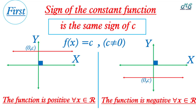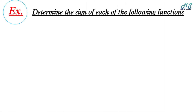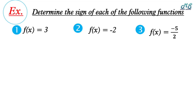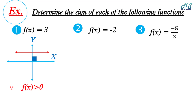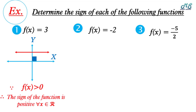Example: determine the sign of each of the following functions. Number one, f(x) = 3. It's represented by a line parallel to the x-axis and above it, because the constant equals 3, which is positive. Now we can say that f(x) is greater than zero, so the sign of the function is positive for all x ∈ ℝ.